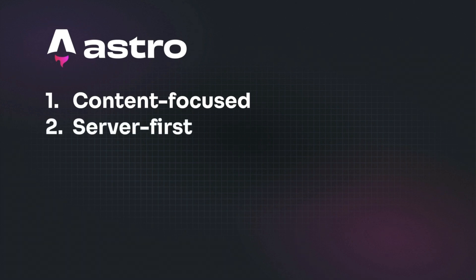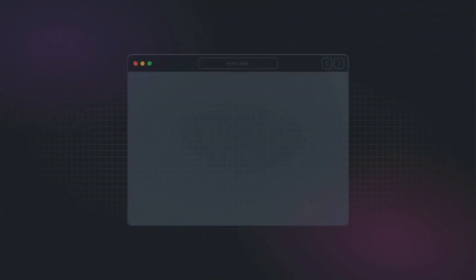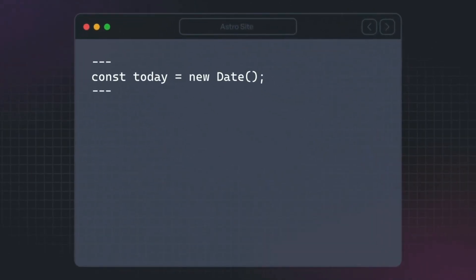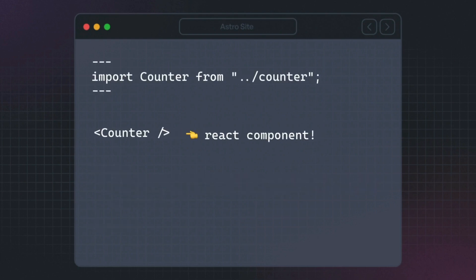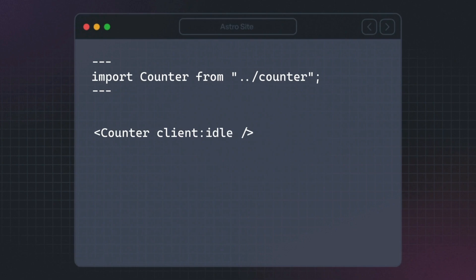Secondly, it's server first. Astro prioritizes server rendering — that can either be ahead of time for the build, or using server-side rendering. This results in faster website performance compared to client-side rendering. That doesn't mean you can't run client-side code; it's just that Astro ships no client-side JavaScript by default, and the separation of concerns is super clear. Anything in the front matter section of an Astro file is run on build or on the server; anything below that is run on the client. You can actually pull in basically any UI framework you want and hydrate it with JavaScript when you want — either when it's visible, on page load, or when the site is done loading. That's called Astro islands.